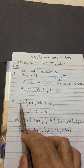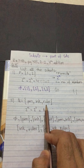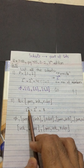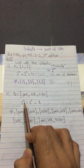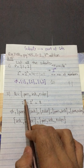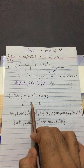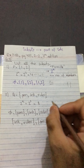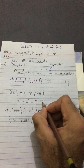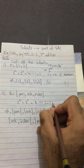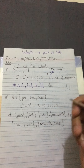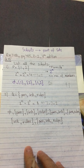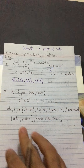For the next part, Q equals {pen, ink, ruler}, which has three members. I will first identify how many subsets will be formed using the formula 2^n with n equal to 3. That gives 2 to the power 3, which means 2 × 2 × 2: first 2 × 2 = 4, then 4 × 2 = 8. So there will be 8 subsets.